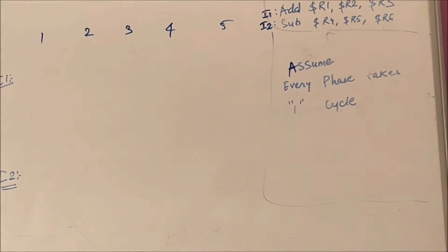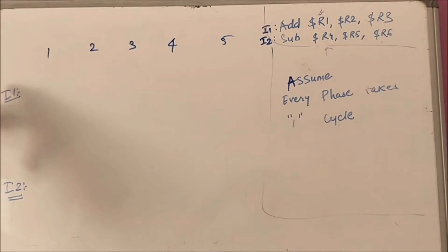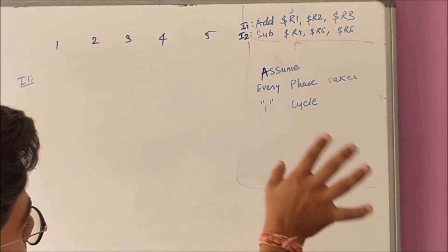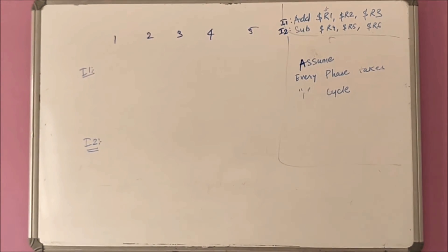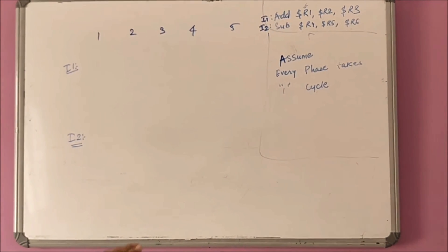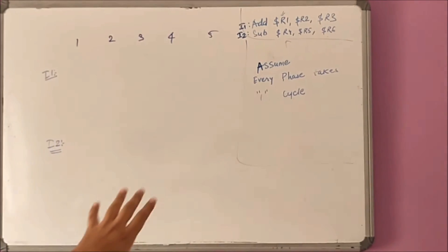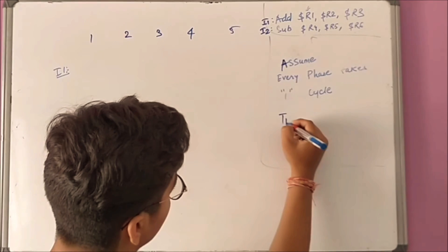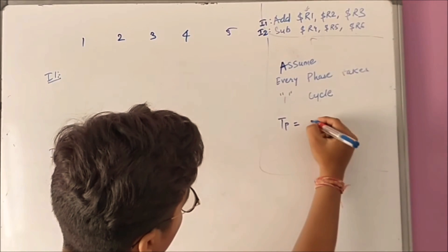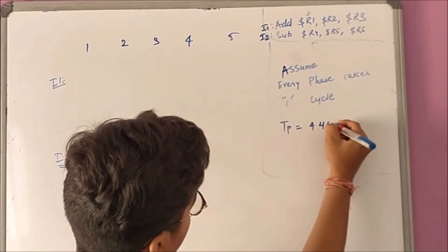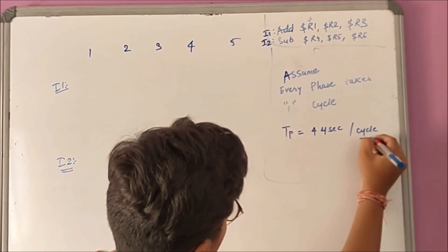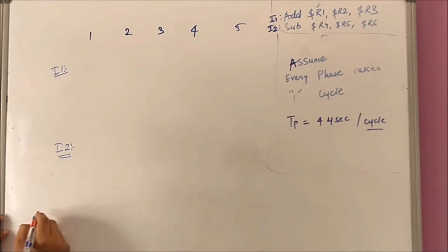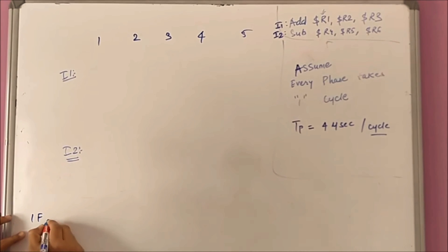We'll be analyzing what time it takes to execute these two instructions. We'll be assuming that each phase takes a single cycle. In reality that is not true, but just for the sake of understanding we are using that assumption. Let us assume that a single cycle takes a time of four microseconds per cycle.